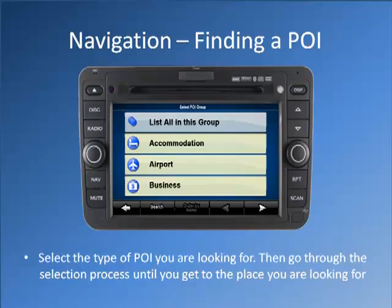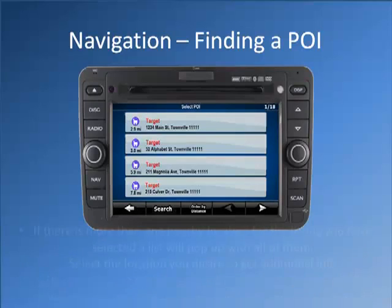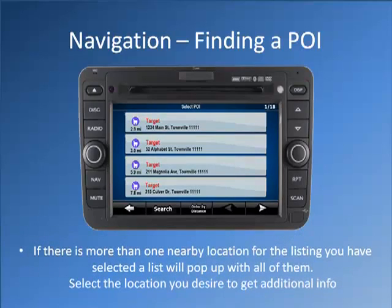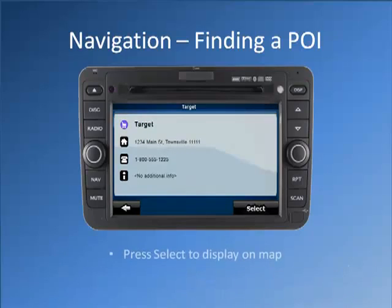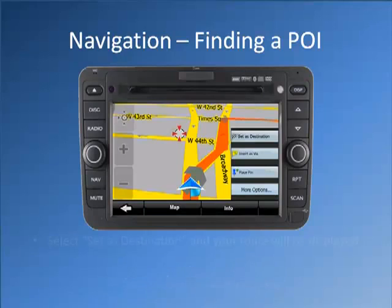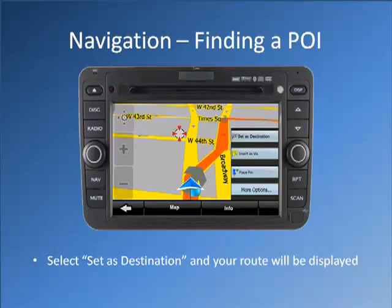Select the type of point of interest you are looking for, then go through the selection process until you get to the place you are looking for. If there is more than one nearby location for the listing you have selected, a list will pop up with all of them. Select the location you desire to get additional information. Press Select to display on map. Select Set as Destination and your route will be displayed.